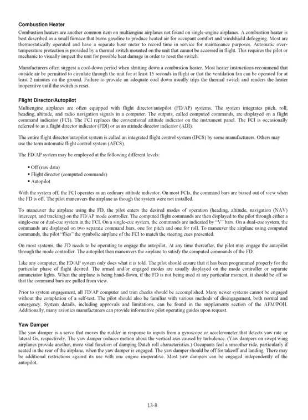Like any computer, the FD/AP system only does what it is told. The pilot should ensure it has been programmed properly for the particular phase of flight. Armed and/or engaged modes are usually displayed on the mode controller or separate annunciator lights. When the airplane is being hand-flown and the FD is not being used, it should be off so the command bars are pulled from view. Prior to system engagement, all FD/AP computer and trim checks should be accomplished. The pilot should also be familiar with various methods of disengagement, both normal and emergency. System details, including approvals and limitations, can be found in the supplement section of the AFM/POH.